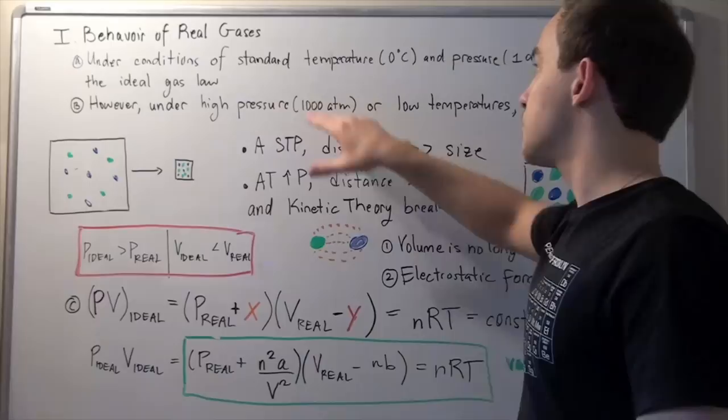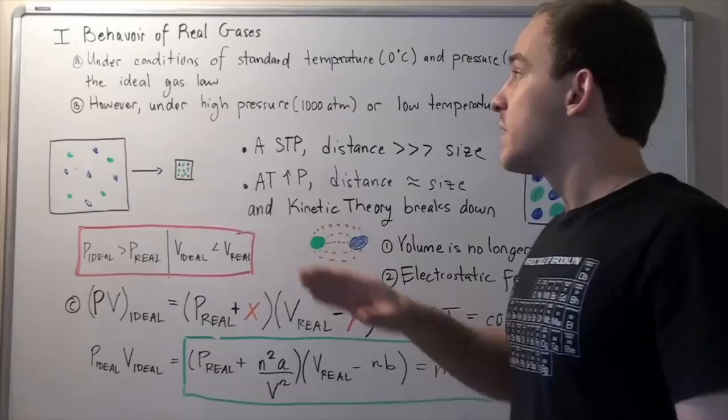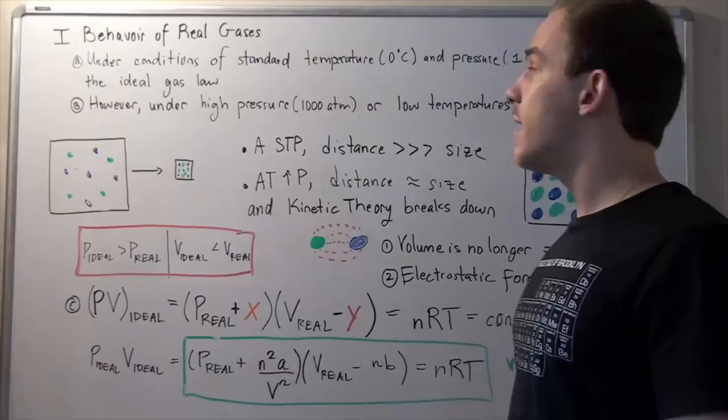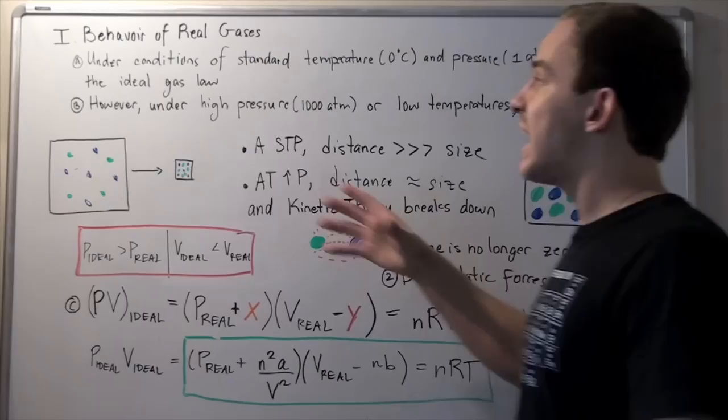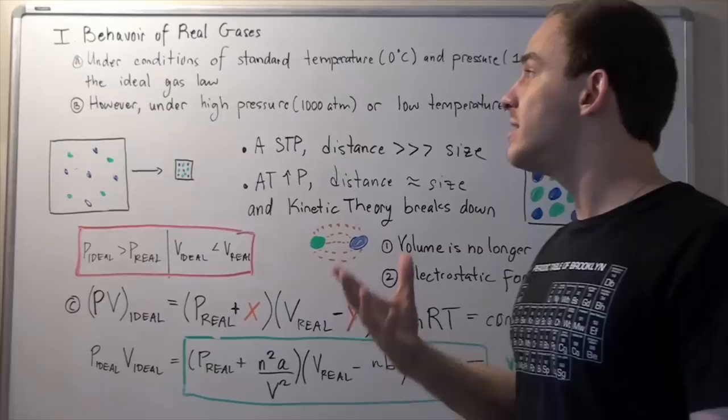Under conditions of standard temperature of 0°C and standard pressure of 1 atm, we can use the ideal gas law to solve problems and figure out how gas molecules behave. Under conditions of high pressure of about 1000 atm and low temperatures, the ideal gas law breaks down, meaning our gas molecules no longer behave according to this law and we can't use it to solve any problems.